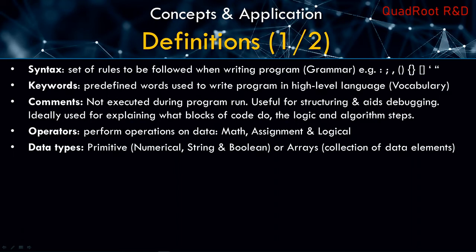Then you have data types. You have three primitive data types: numerical, which are numbers; string, which are text; and Boolean, which are binary — yes or no, true or false. Or you can have arrays, which are a collection of these data elements — could be a collection of numerical, or a collection of strings, or Booleans, or a combination of either.